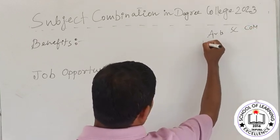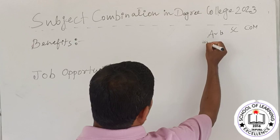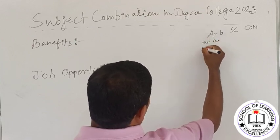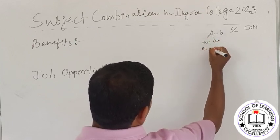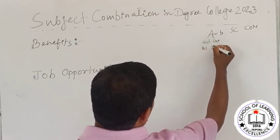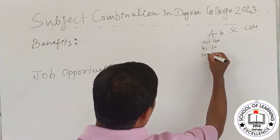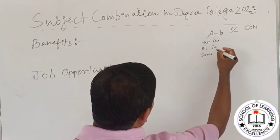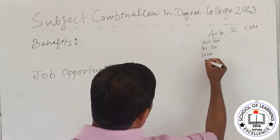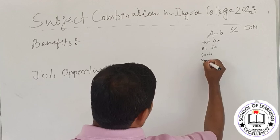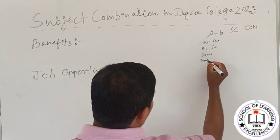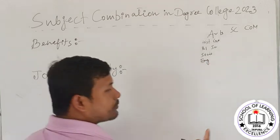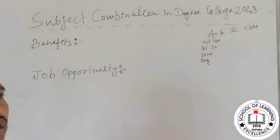In the Arts stream, subjects include History, Geography, Political Science, and Sociology. English is compulsory.